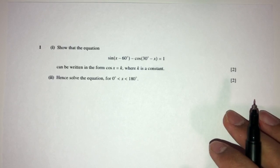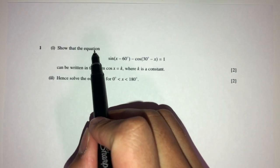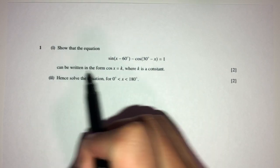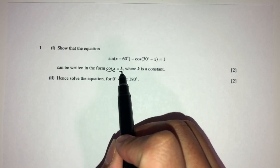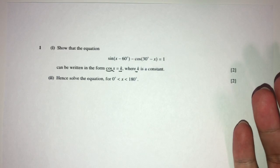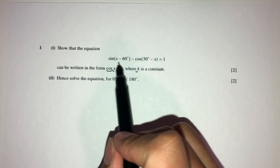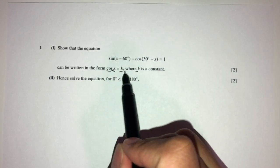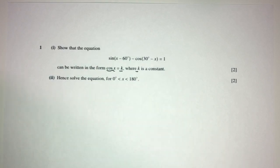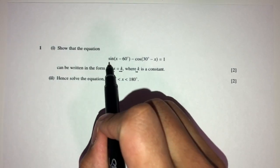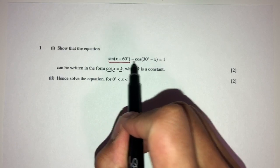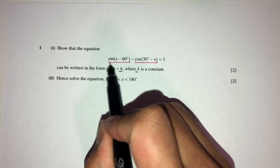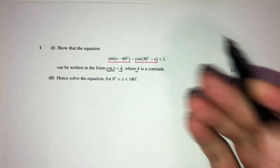So now we have question number one. We have to show that this equation can be written in the form cos x = k, where k is a constant. So we have to change the whole thing into this form cos x = k. So what do we observe? We have this expression here and this one here — can we simplify these? Of course yes.